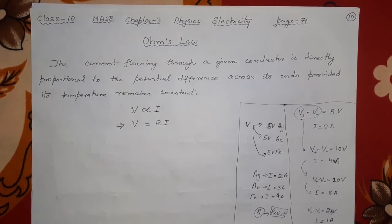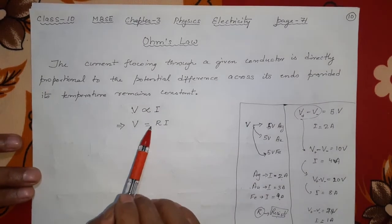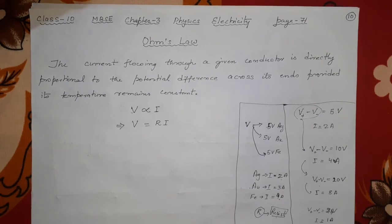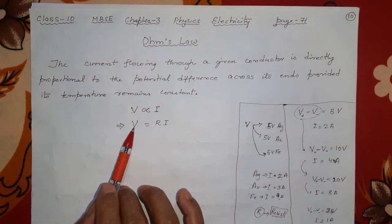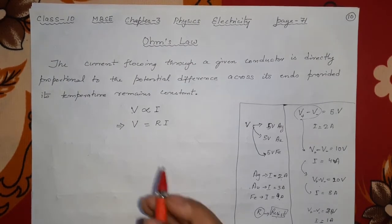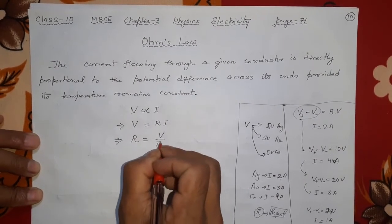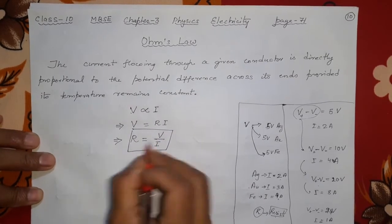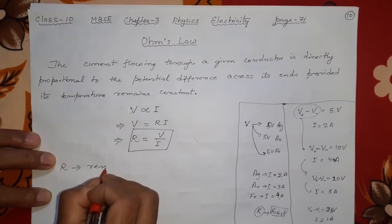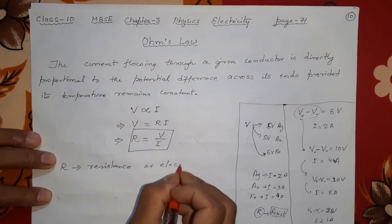So there are two things: voltage and resistance. Their relation is V equals R times I. Current is decided by both potential difference and resistance. From this formula, R equals V divided by I. So resistance is voltage divided by current.